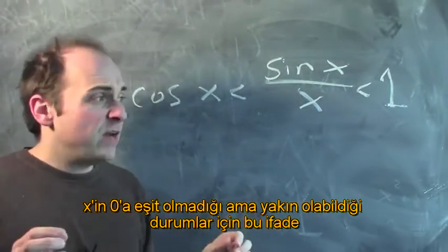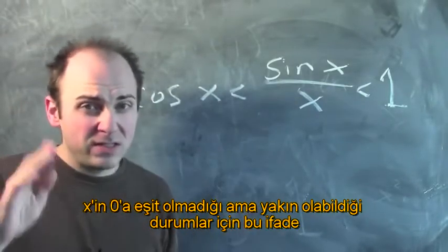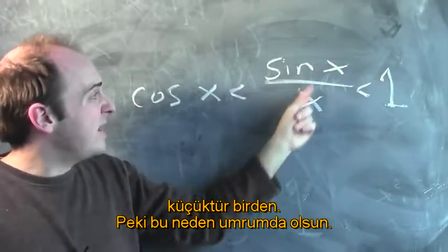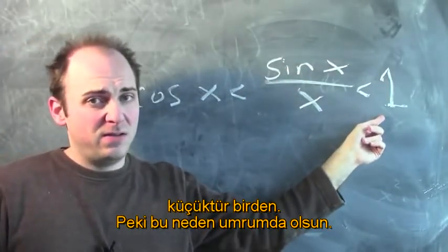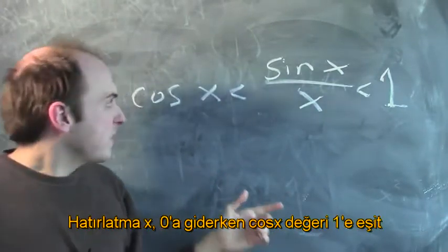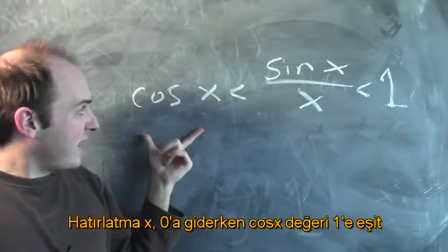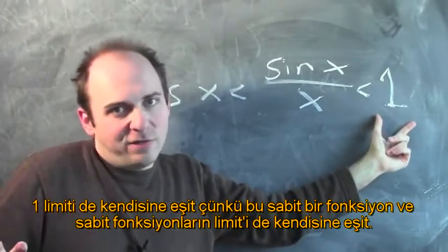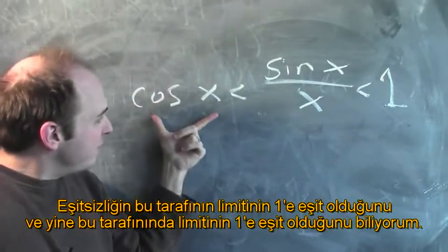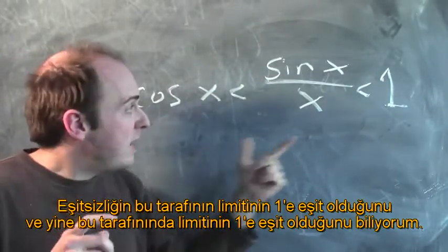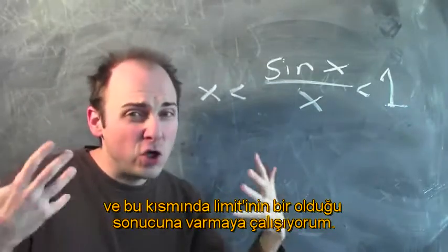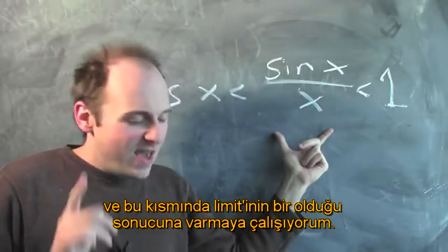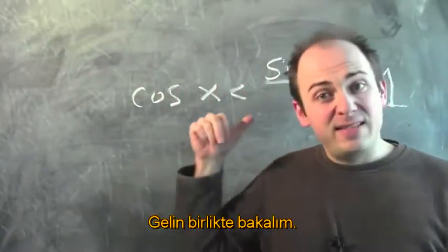It turns out that for values of x which are close to but not equal to 0, the following is true: cosine of x is less than sin x over x, and sin x over x is less than 1. Why would you care about this? Note that the limit of cosine x as x approaches 0 is 1, and the limit of 1 is 1, because the limit of a constant function is just that constant. So the limit of the left side is 1 and the limit of the right side is 1, and what we want to conclude is that the limit of the thing in between is also 1. It turns out there's a way to do this.